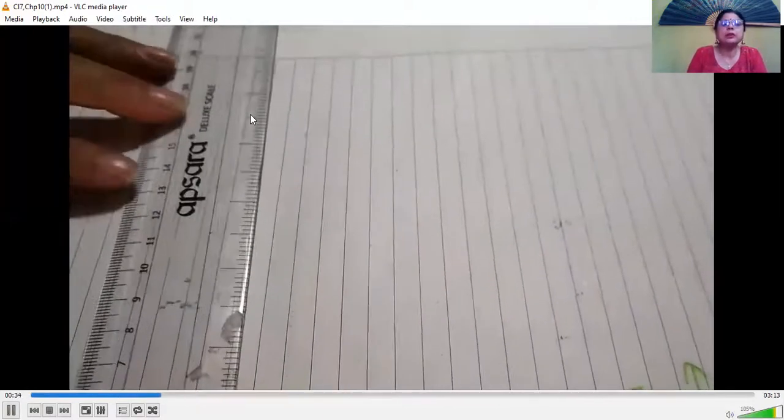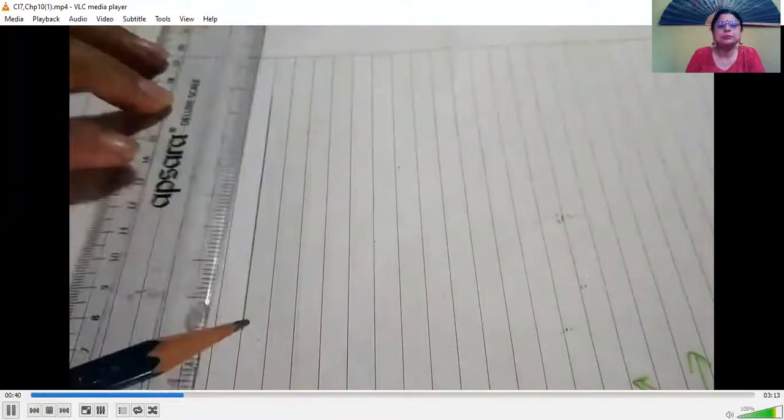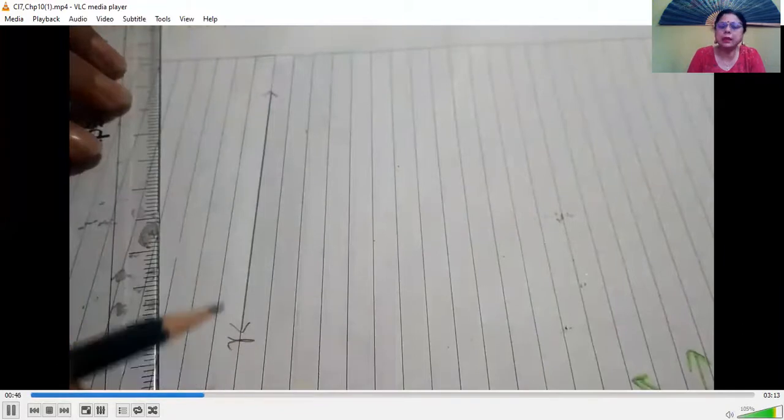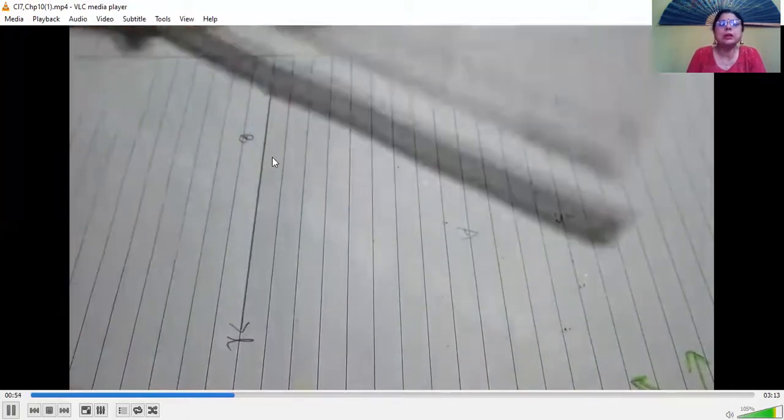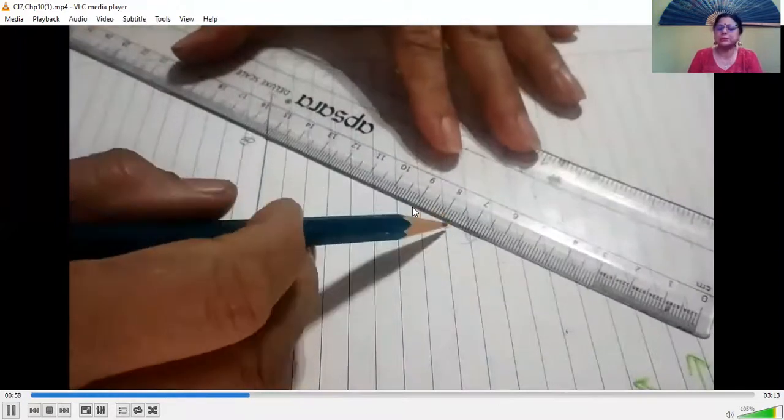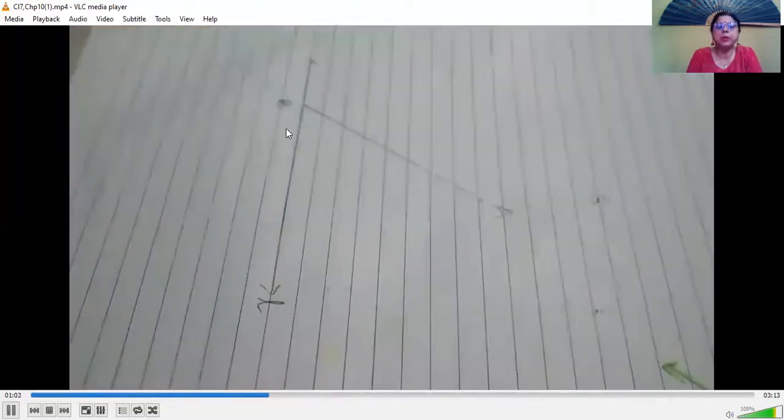Now using a ruler, we draw the given line and name it L. We take a point A which is not on the line. This condition was also given. Now we take another point B on the line and join points A and B.